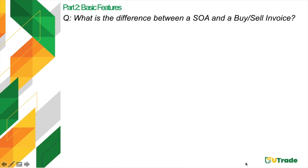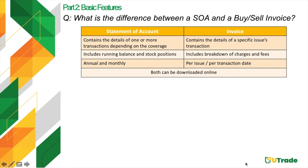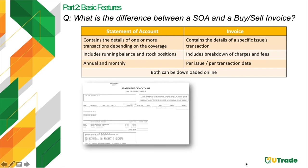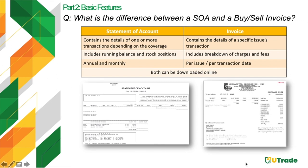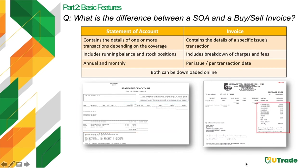The difference between a Statement of Account and an Invoice: the Statement of Account contains details of one or more transactions depending on coverage, including running balance and stock positions, and is uploaded annually and monthly. An Invoice contains details of a specific issued transaction, including a breakdown of charges and fees, and is uploaded per transaction. Both can be downloaded live.